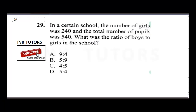Hello, question 29. If you've not hit the subscribe button, please do so and click on the notification bell so you can get updates when we release content. Question 29 says: in a certain school, the number of girls was 240 and the total number of people was 540. What was the ratio of boys to girls in the school?